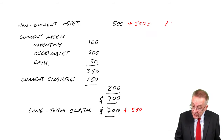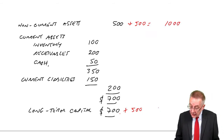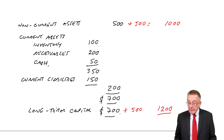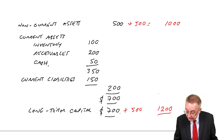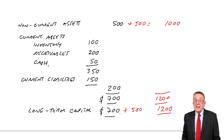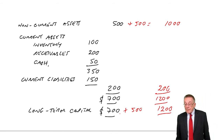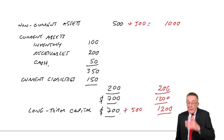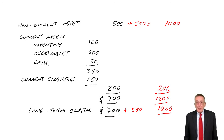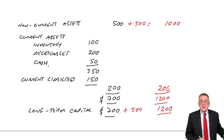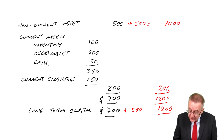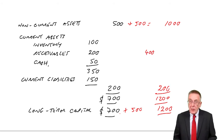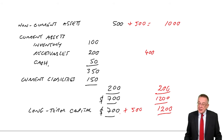So next year, the non-current assets will be 1,000 and the long-term capital will be 1,200. If 1,000 of it is in non-current assets, it leaves 200 for the working capital. But the problem is this: if the company has doubled in size, hopefully we'll be selling twice as much. And if we're selling twice as much, receivables will be twice as high. I'm not saying we sell exactly twice as much — it's an illustration — but surely if we are twice as big, you'd expect sales to be a lot higher, and automatically your receivables will be higher.